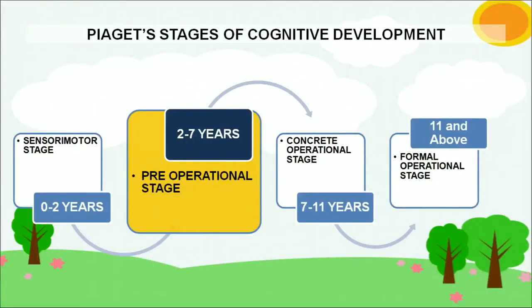We must have heard about Jean Piaget, who is a very well known cognitive developmental psychologist. He has given us 4 stages of cognitive development. As you can see on the flow chart, the first stage is the sensory motor stage for 0 to 2 years of age, then the pre-operational stage for 2 to 7 year old children, then concrete operations for 7 to 11 year olds, and formal operational stage for 11 and above.